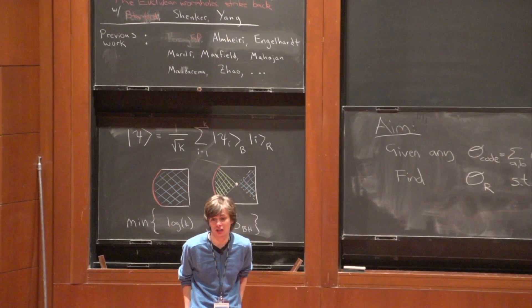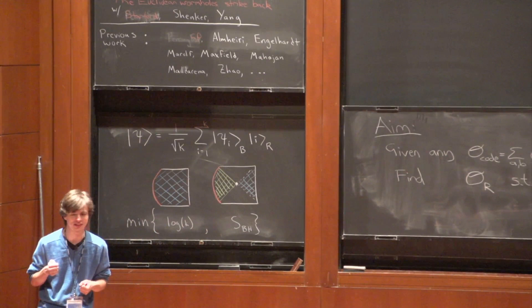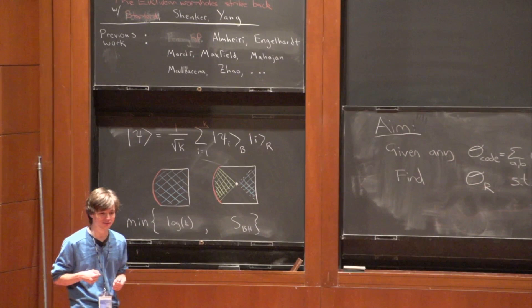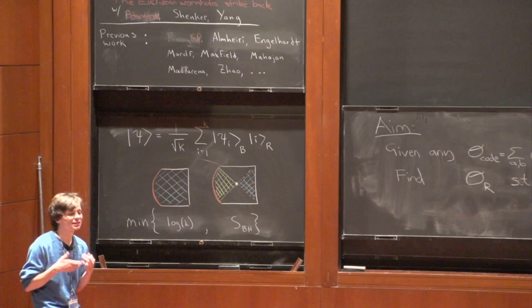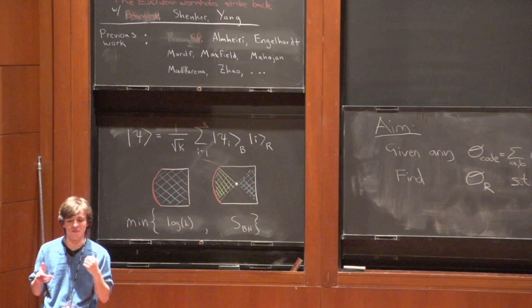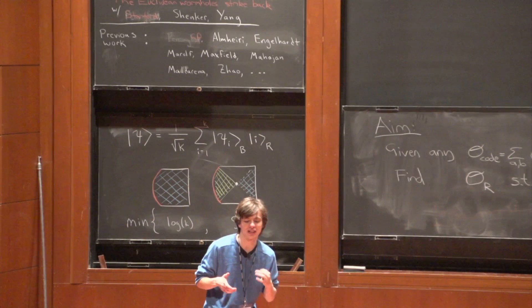That was our second major goal for this paper, and that's what I'm going to be talking about — it's section three of our paper. What we're going to find is that, just like for the page curve, there's going to be a really crucial role played by Euclidean wormholes connecting different spacetimes.